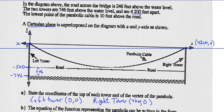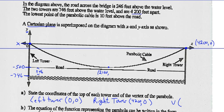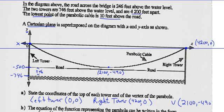We also want the coordinates for the vertex of the parabola. The vertex should be halfway between the two x-intercepts, so half of 4,200 is 2,100. We're told the lowest point of the cable is 10 feet above the road. The road is at negative 500, so 10 feet above that is negative 490. Our vertex is at (2100, -490).